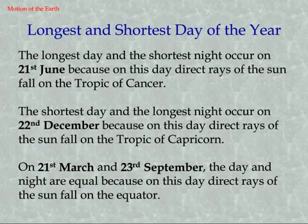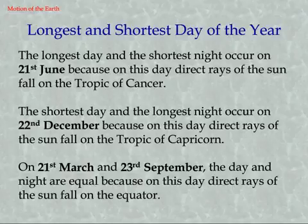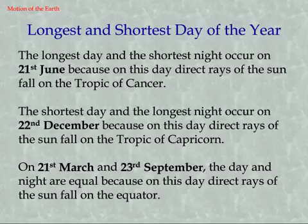Longest and Shortest Day of the Year: The longest day and the shortest night occur on 21st June, because on this day direct rays of the Sun fall on the Tropic of Cancer. The shortest day and the longest night occur on 22nd December, because on this day direct rays of the Sun fall on the Tropic of Capricorn.